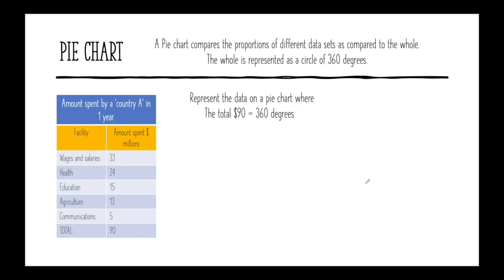Another type of chart we can use to compare information is the pie chart. A pie chart compares the proportions — just like the proportion bar, we can see the proportions in relation to the total or the whole. So a pie chart compares the proportions of different data sets compared to the whole, and the whole is represented as a circle of 360 degrees.